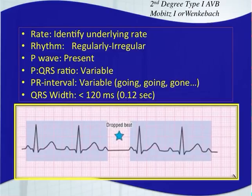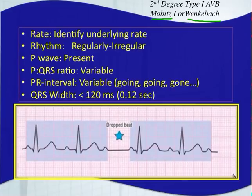The next type of AV block is a second degree type 1, also called Mobitz 1 or sometimes Wenckebach phenomenon. You have two second degree AV blocks: type 1 and type 2. Second degree type 1 is Mobitz 1 and second degree type 2 is Mobitz 2. If anybody says it's a Mobitz, they're saying it's a second degree AV block.